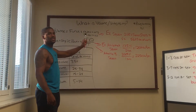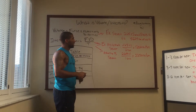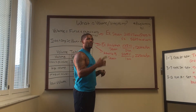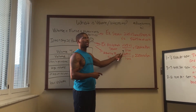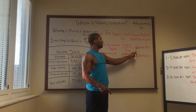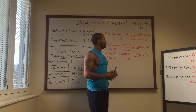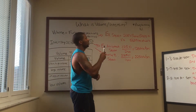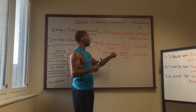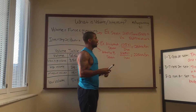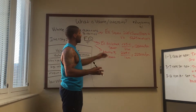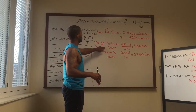Intensity, on the other hand, is equivalent to power, which is force times distance over time. So for example, Athlete A squats 225 for one rep and it takes him two seconds to complete that rep — his intensity, or power output, is going to be 112.5 foot-pounds per second. Athlete B also squats 225 but it only takes him one second, so his power output is going to be 225 foot-pounds per second.